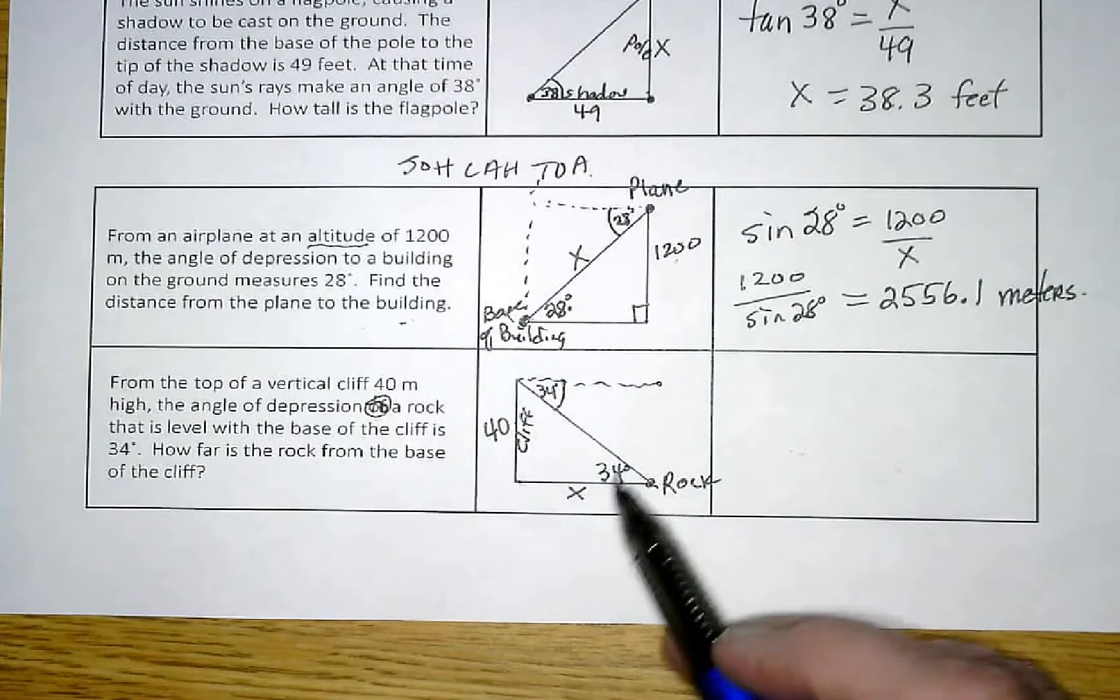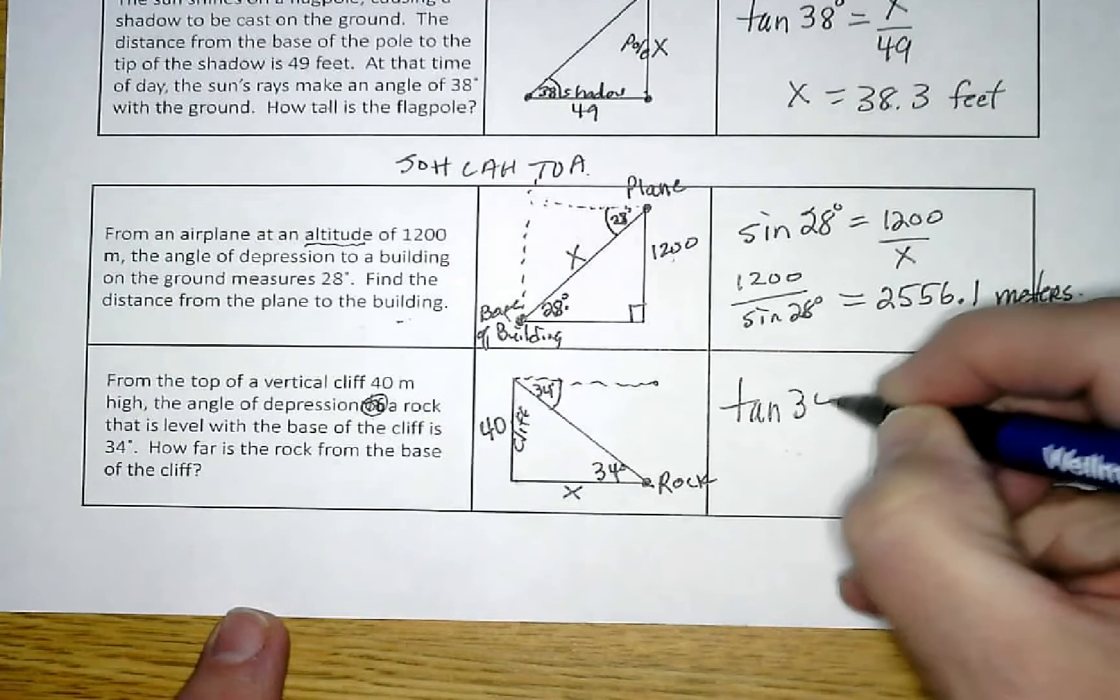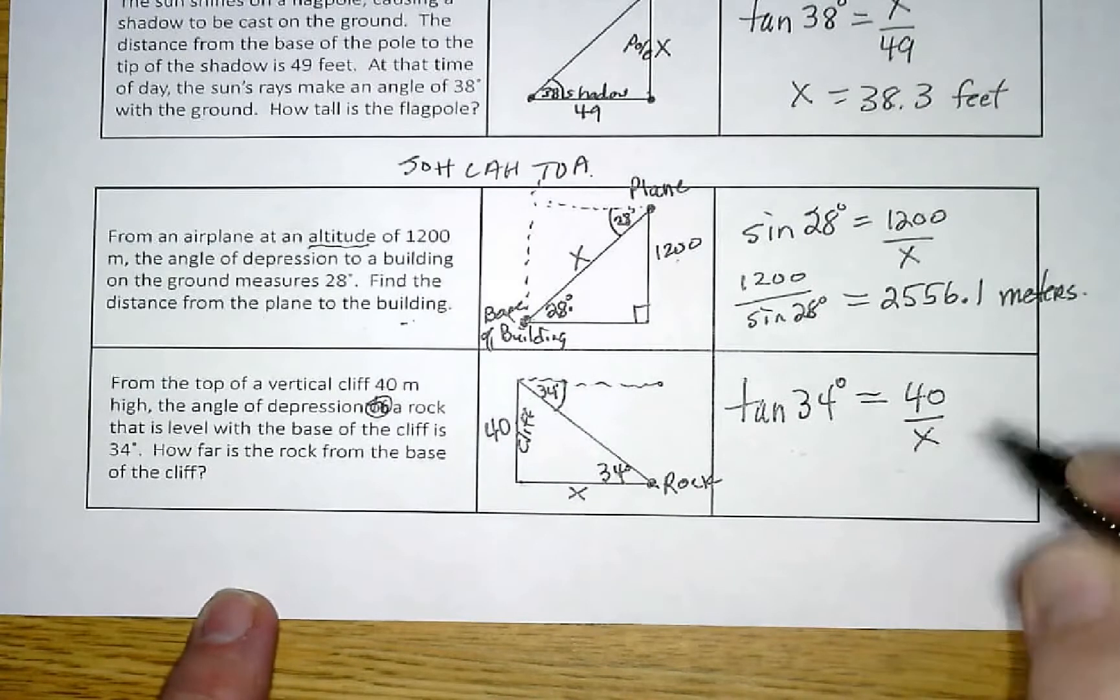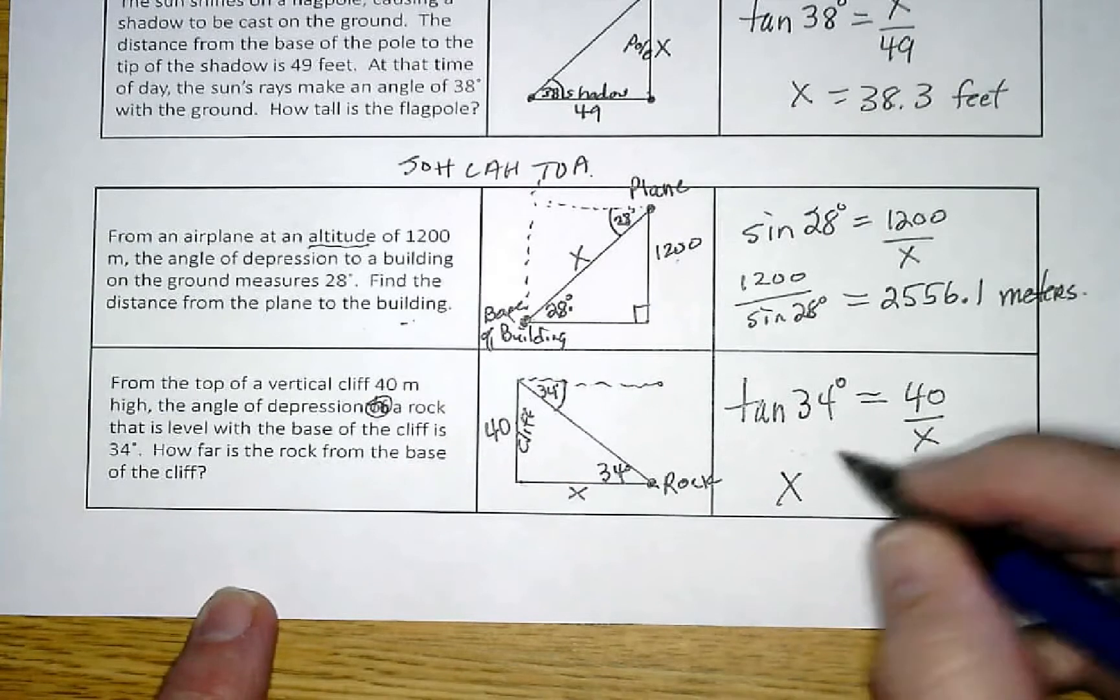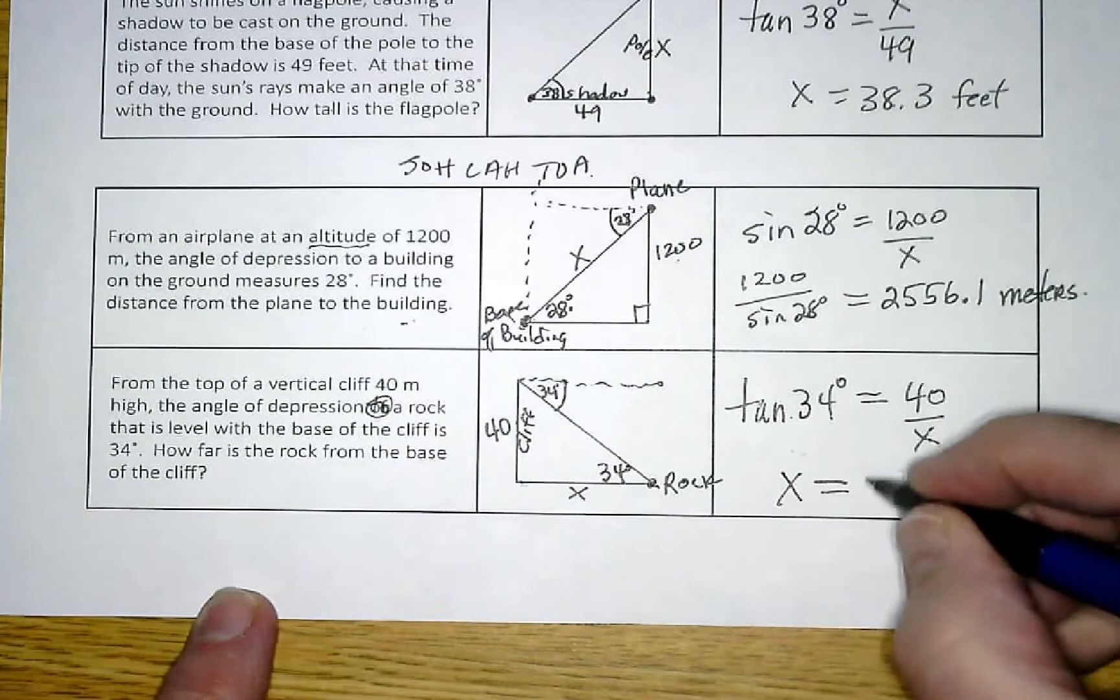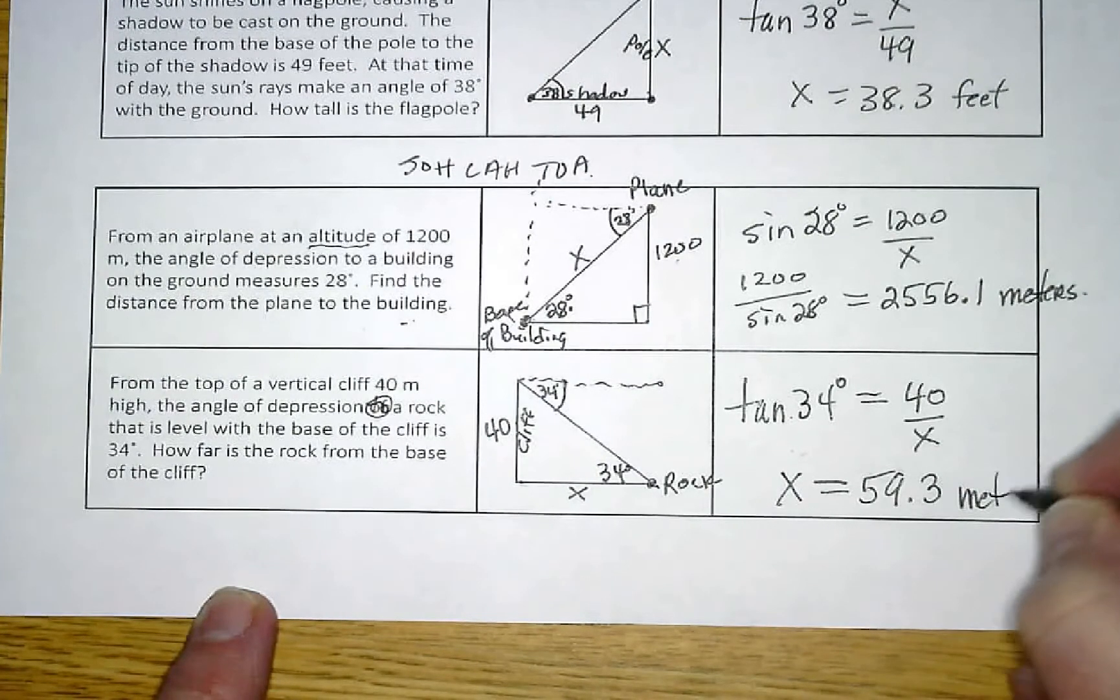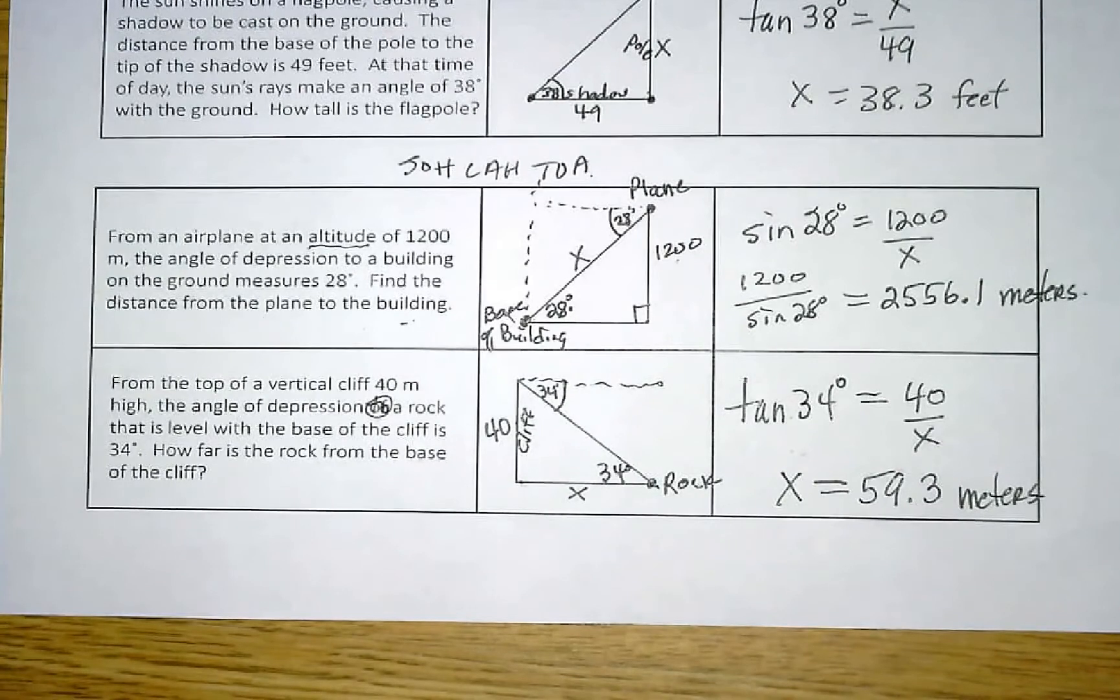So if I have opposite and adjacent, that's going to be tangent. Tangent 34 degrees equals opposite over adjacent. Again, this is going to be a divide problem if X is on the bottom, so 40 divided by tan of 34 is 59.3 meters. Okay, if you have any questions let me know.